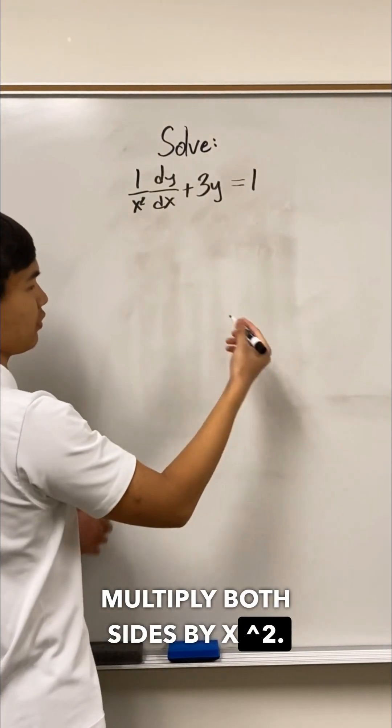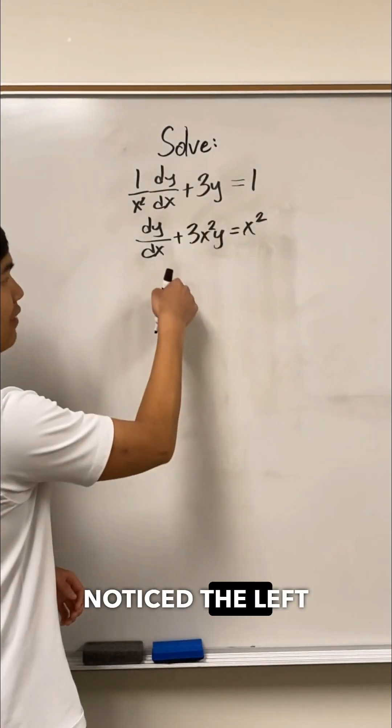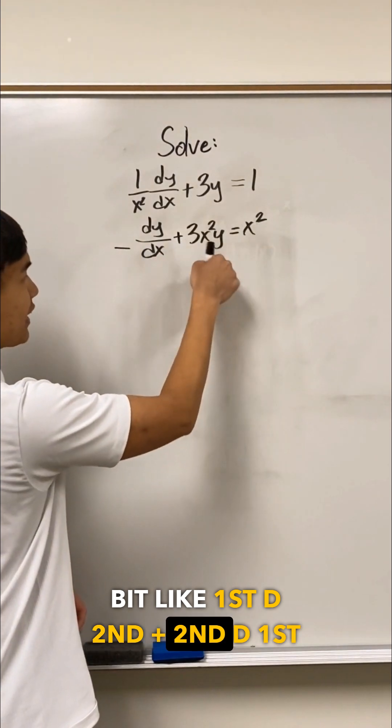So I'm going to multiply both sides by x squared. You might have noticed the left side looks a little bit like first d second plus second d first.